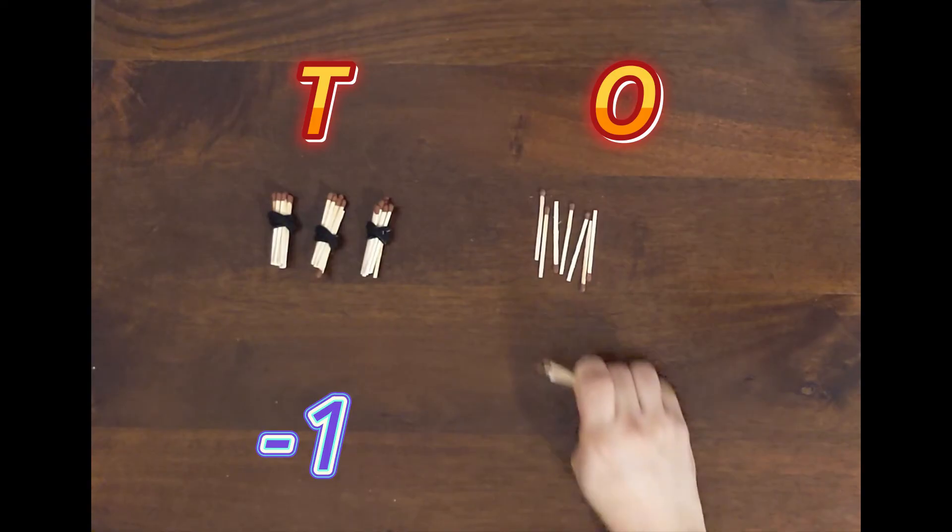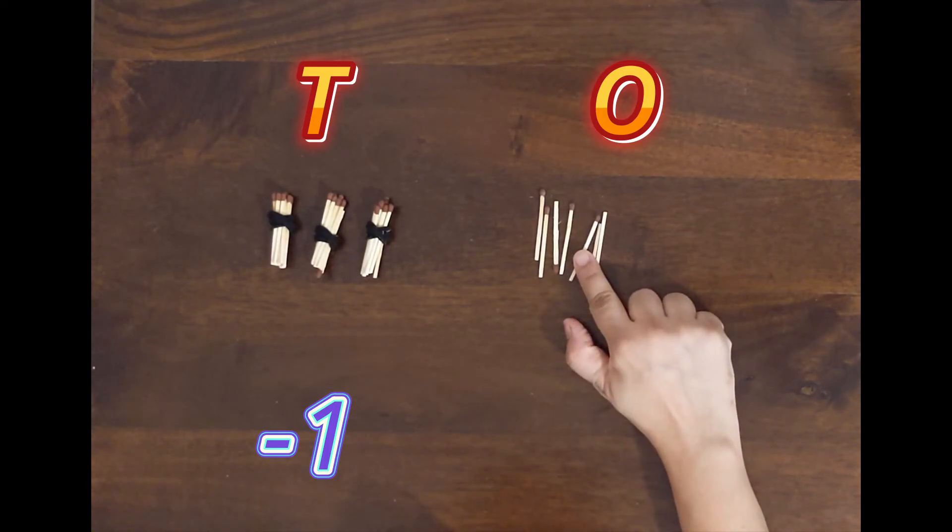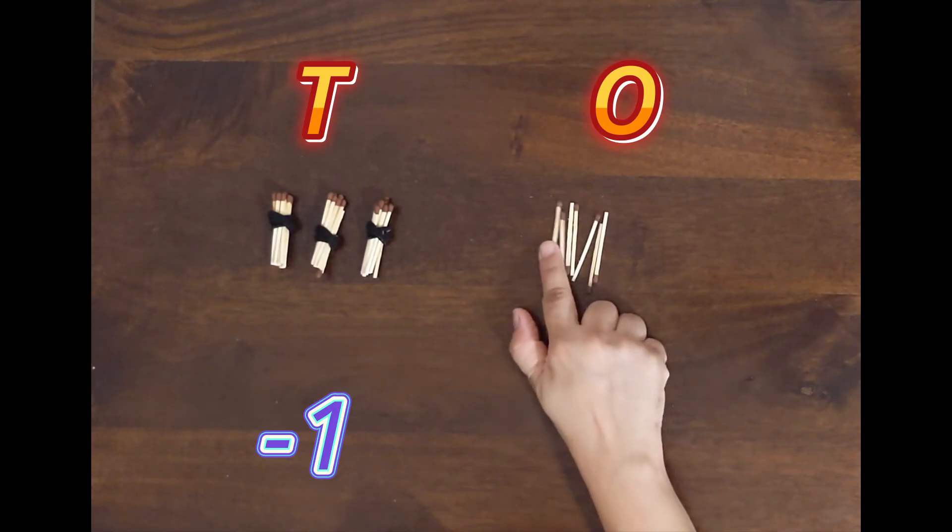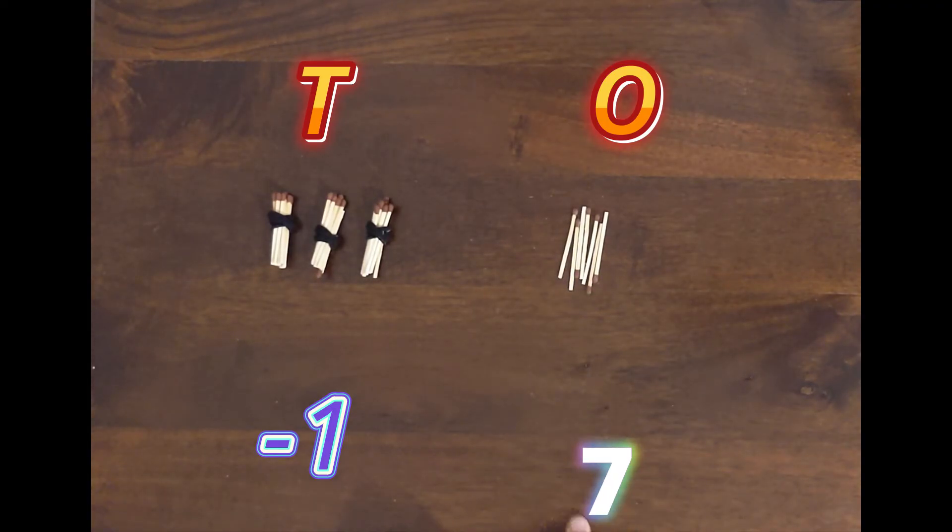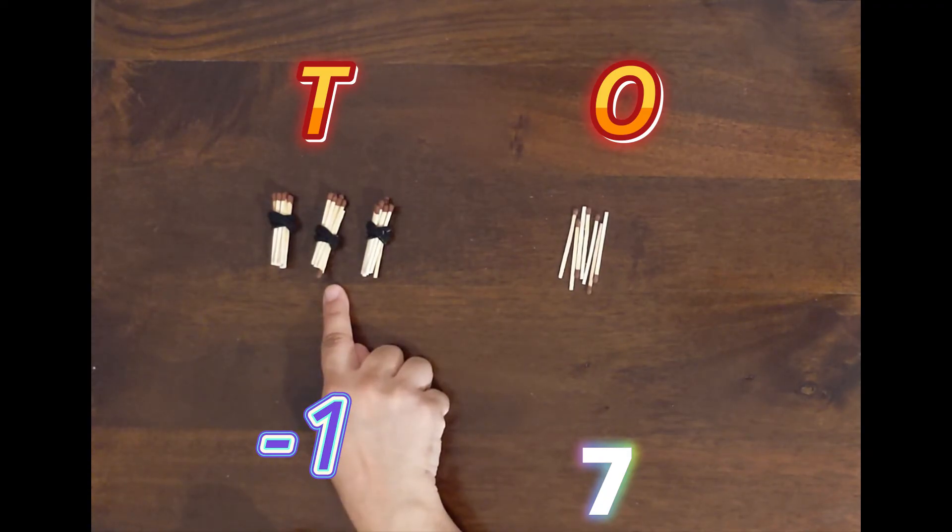So we take away 6 ones from 13 ones. How many ones are left now? 1, 2, 3, 4, 5, 6, 7. So we have 7 ones.